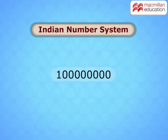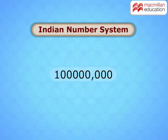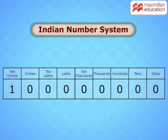Take a look at a large number written in the Indian number system. The commas are placed first after the hundreds place and then after every two digits. The place values in the Indian number system are: units, tens, hundreds, thousands, ten thousands, lakhs, ten lakhs, crores, and ten crores.